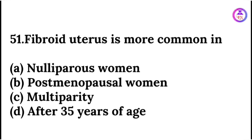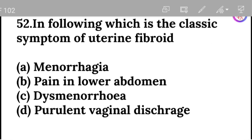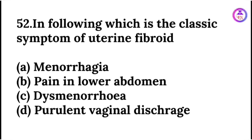Fibroid uterus is more common in nulliparous women. Which is the classic symptom of uterine fibroid? The answer is menorrhagia.